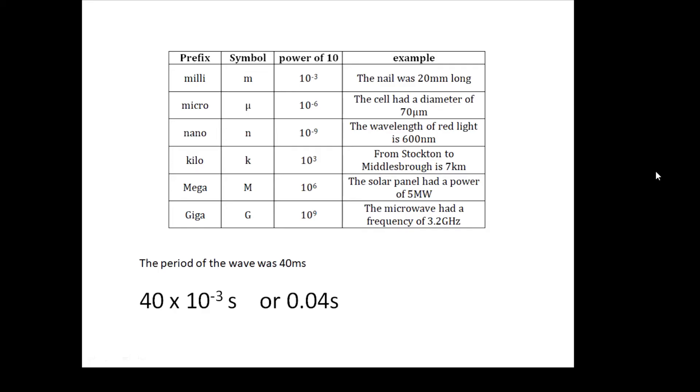The third three are for bigger things. Kilo, you should know. A kilometer is 1,000 meters. 10 to the 3 meters. Mega is a million. 10 to the 6. The solar panel had a power of 5 megawatts. 5 million watts. And giga is 10 to the 9. The microwave had a frequency of 3.2 gigahertz. That's 3.2 times 10 to the 9 hertz. You must learn your prefixes and be able to use them.